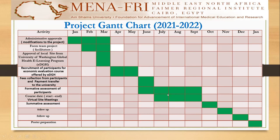The course started in July and is currently running through to September. Formative assessment of participants is currently conducted both before the course and during the course. Virtual site meetings during the course have been conducted from the first of July and are still ongoing until the end of the course in September.